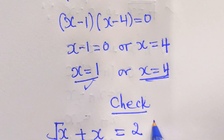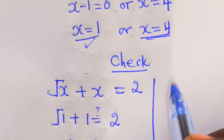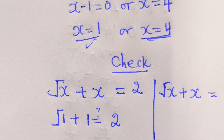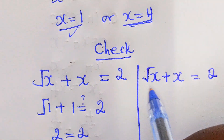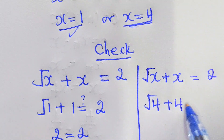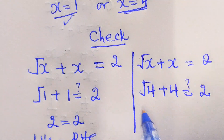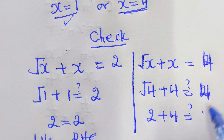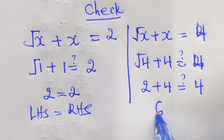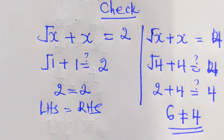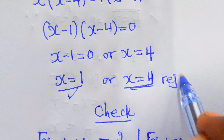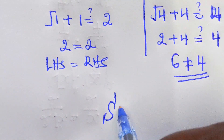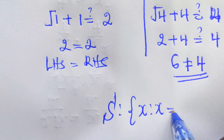Our second value of x: square root of x plus x equals to 2. Right here, square root of 4 plus 4 equals to 2? That gives 2 plus 4 equals to 6, but 6 does not equal to 2, so this value will be rejected. Then, the solution set: x such that x equals to 1.